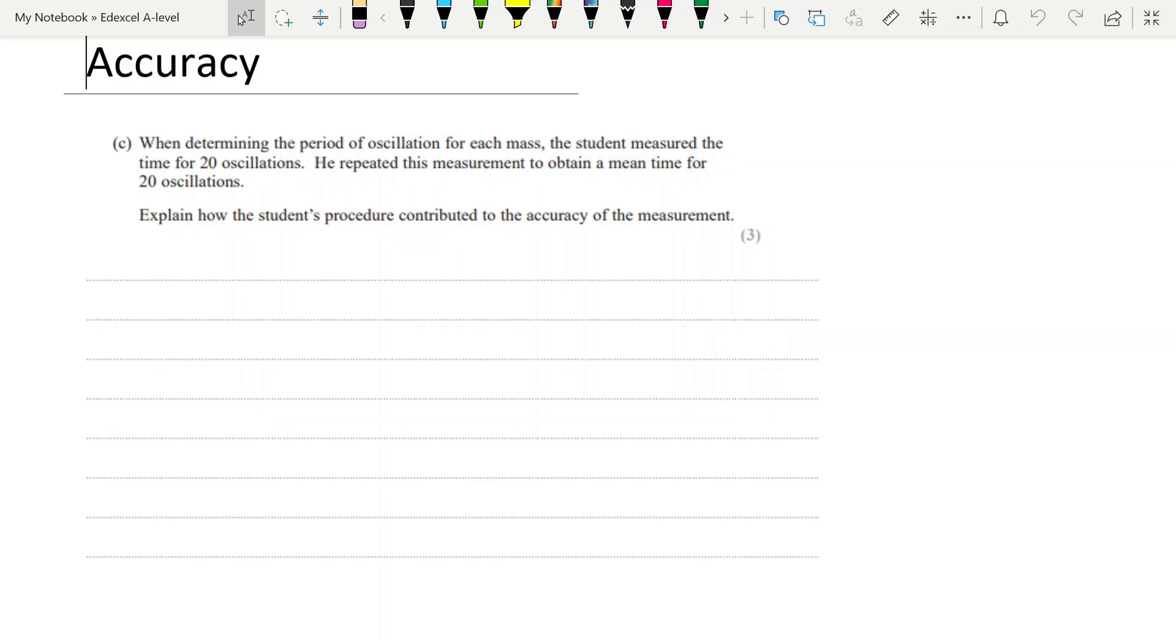Now to reduce the effect of random errors we tend to do repeats and take an average. Please remember that an average calculation does not remove random errors. The idea is that it smooths them out so one compensates for the next but you have to use the phrasing 'reduces the effect of random errors.' And of course measuring something over a longer distance or a longer time makes sure that you are removing or reducing any timing errors. Reducing their effect.